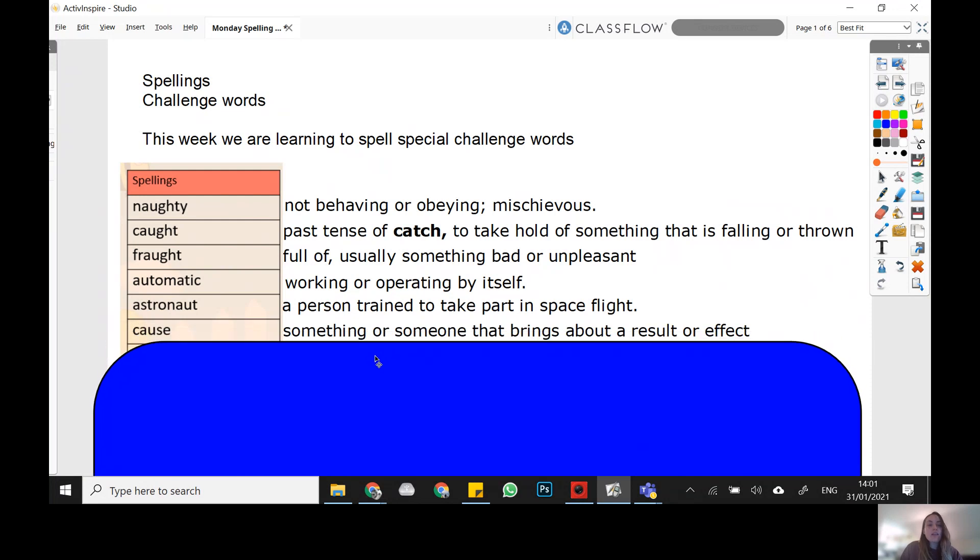The next word is cause. So something or someone that brings about a result or an effect. So for example, the cause of the explosion was the gasoline interacting with something or the fire. So the cause has to be one thing that starts another thing happening.